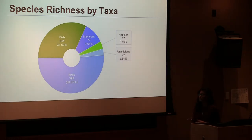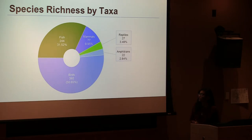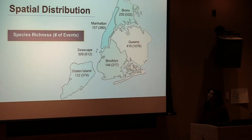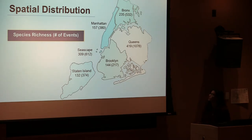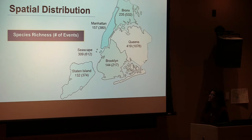In terms of species richness — the number of different species — birds have the most at 392, representing about 50% of all species observed. Fish were second at about 31%, mammals third at about 10%, and amphibians and reptiles each around 3%. Looking at species richness distribution across the five boroughs, Queens had the highest species richness at 419 with 1,076 events. Second was the seascape, followed by the Bronx and then Manhattan.